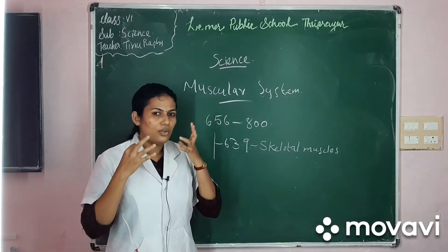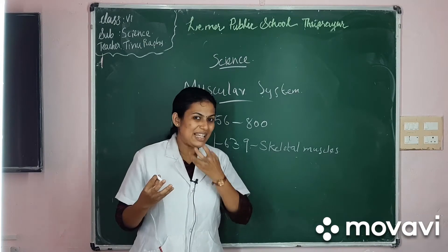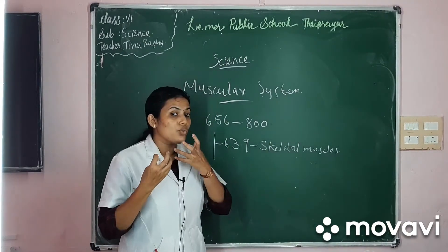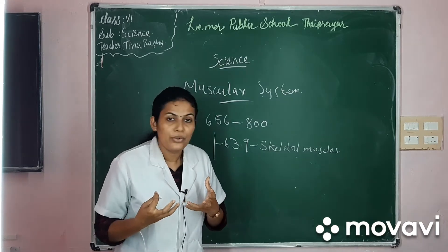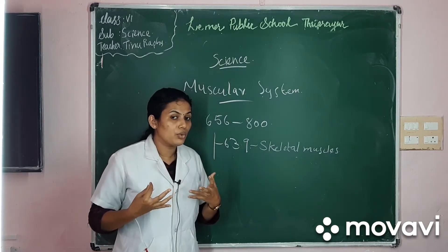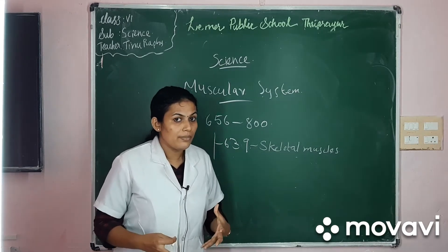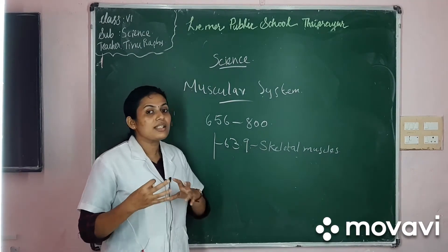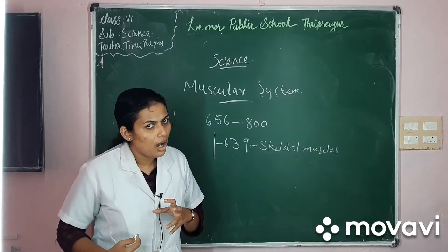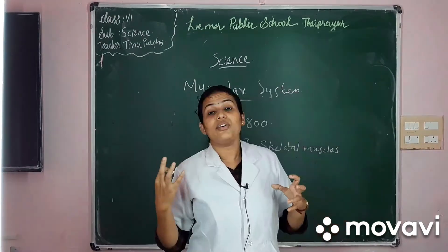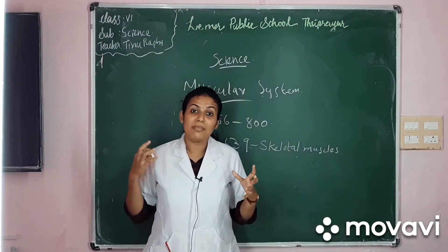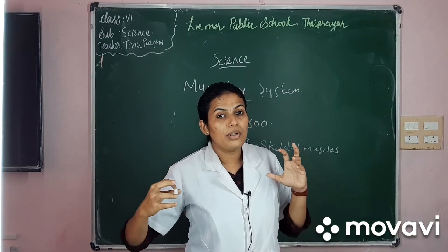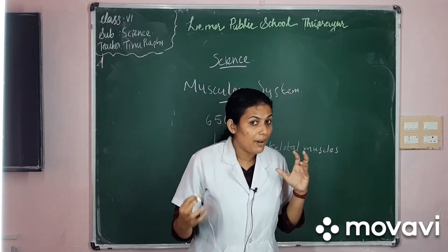These skeletal muscles control facial expressions like smiling, help in the movement of the body, assist in the chewing of food and movement of food through the digestive system, and even help in the beating of the heart. Contraction and relaxation of the muscles are required for the movement of the body and its parts.